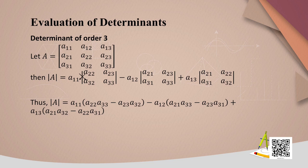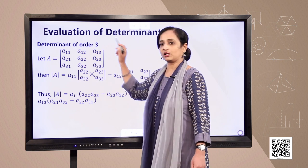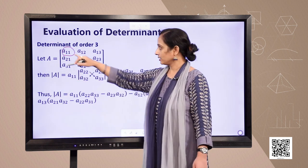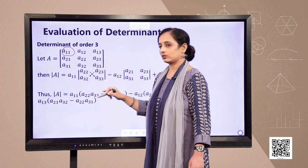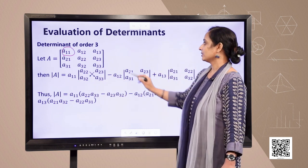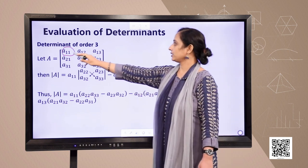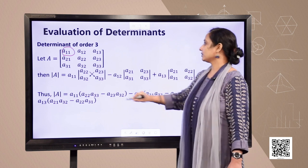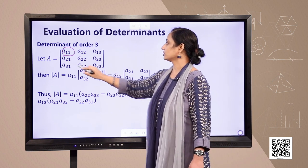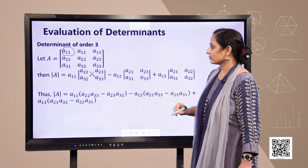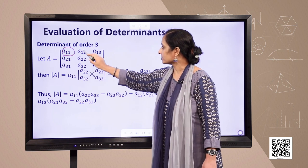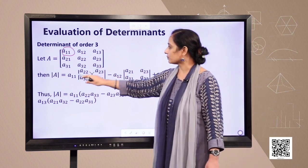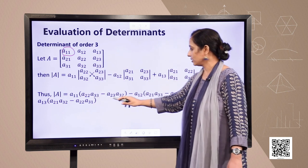Now let us learn how to evaluate a determinant of order 3. For a third-order matrix A, you take element A11, delete the first row and first column, and write the remaining 2×2 determinant. Then take A12, delete the first row and second column, and write the remaining four elements as a determinant. Then take A13, delete the first row and third column, and write the remaining elements. Keep in mind: A11 is positive, the next element is negative, then positive — the signs alternate. Then simplify using the second-order determinant method.